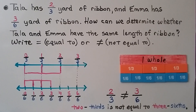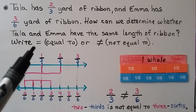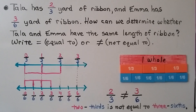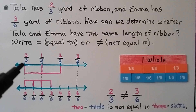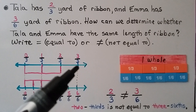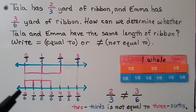Tala has two-thirds yard of ribbon and Emma has three-sixths yard of ribbon. How can we determine whether they have the same length? We need to write an equal symbol or a not-equal-to symbol. We can use a number line split into thirds: zero-thirds, one-third, two-thirds, three-thirds. And we have another number line split into sixths — six parts.